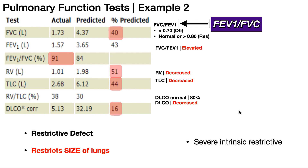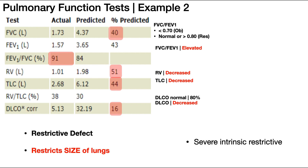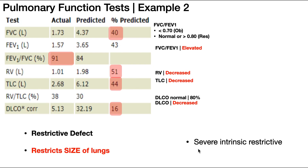We can also look at stratification — whether it's mild, moderate, severe, or very severe. Since it's restrictive, we look at the percent predicted FVC. If it's between 60 and 80%, it's mild; 50 to 60% is moderate; less than 50% is severe. The percent predicted FVC here is 40%, which is less than 50%. So this is a severe case. Our full answer would be a severe intrinsic restrictive defect.